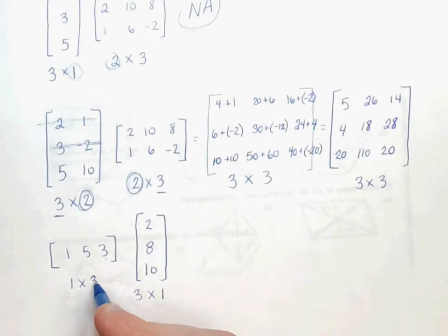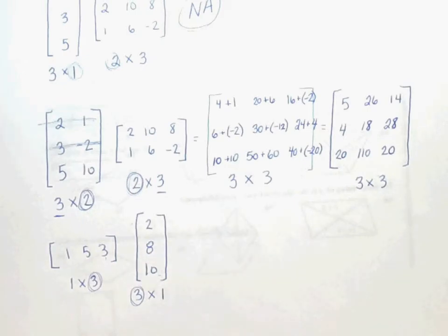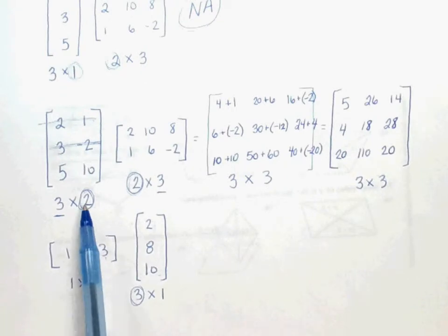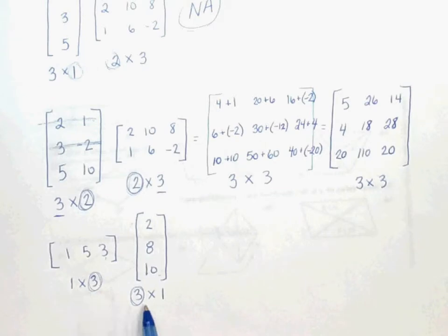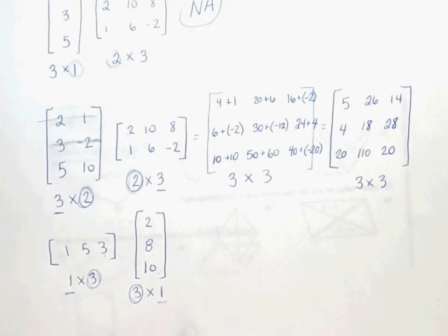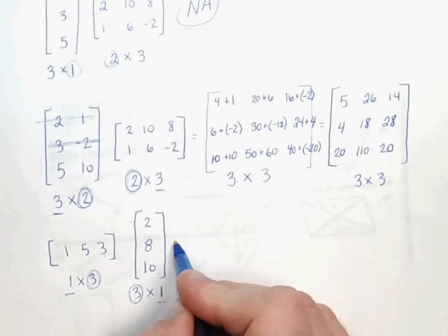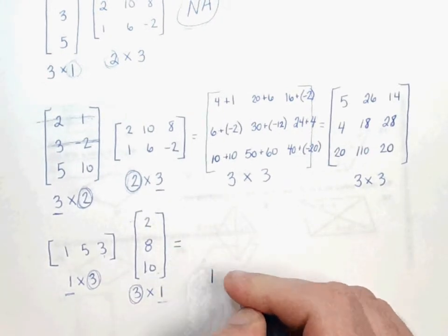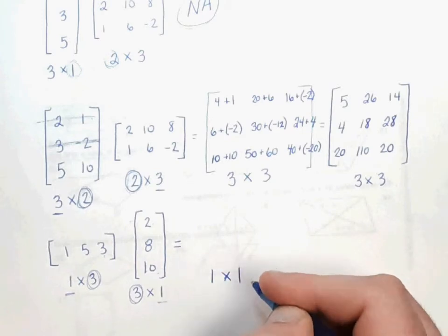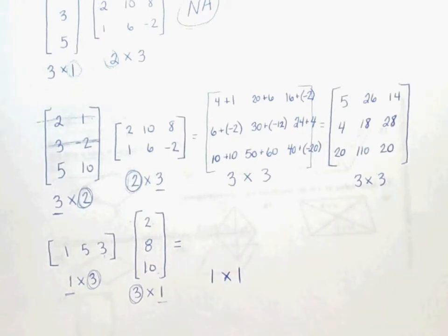So we check our inside numbers. Do they match? Yes, they do. This time, we have three columns here in our first one, whereas we just had two earlier. Our outside numbers are 1 and 1. So that tells us that our answer matrix is going to be a 1 by 1 answer matrix, which means we're only going to have one element here.